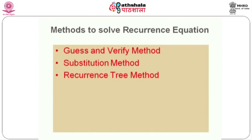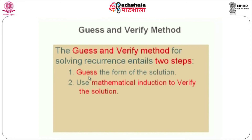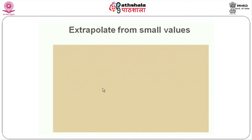The guess and verify method is a method for solving the recurrence equation. It consists of two steps: one is the guess, where we try to guess what the solution is going to be, and in the second stage we verify the solution using the concept of mathematical induction. For example, we will take the Towers of Hanoi problem. The recurrence equation is T(n) = 2·T(n-1) + 1.